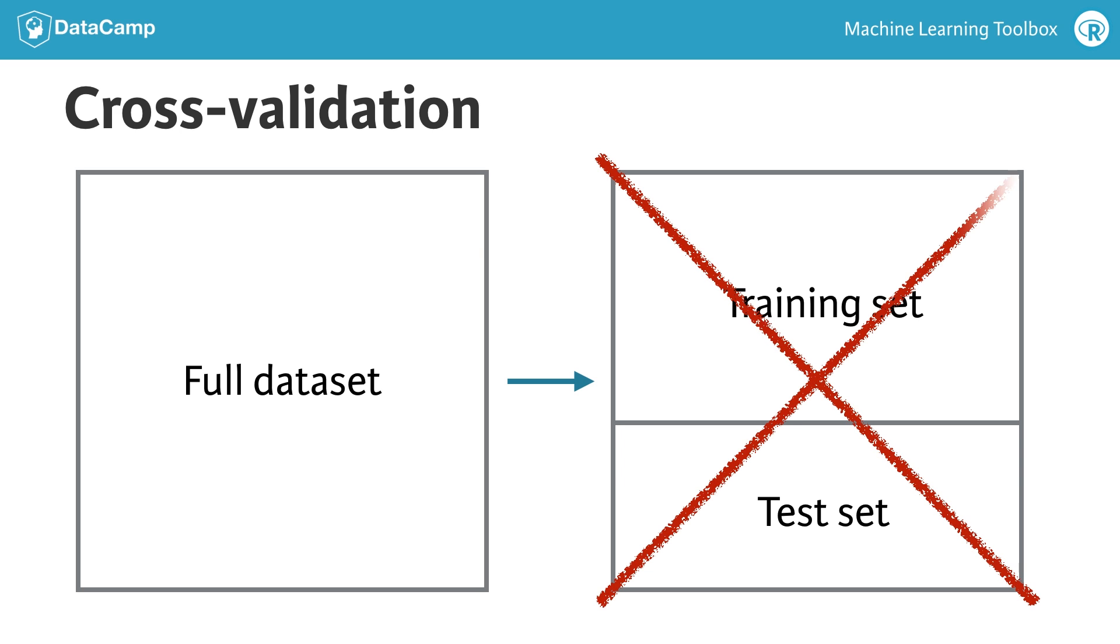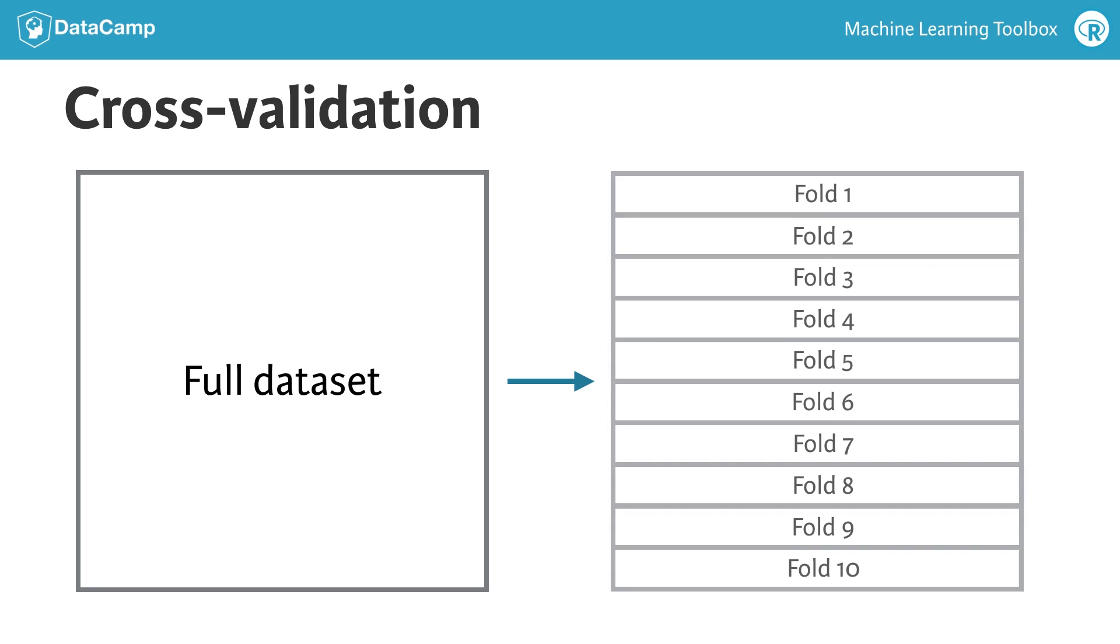A better approach than a simple train-test split is using multiple test sets and averaging out-of-sample error, which gives us a more precise estimate of the true out-of-sample error. One of the most common approaches for multiple test sets is known as cross-validation, in which we split our data into 10 folds, or train-test splits.